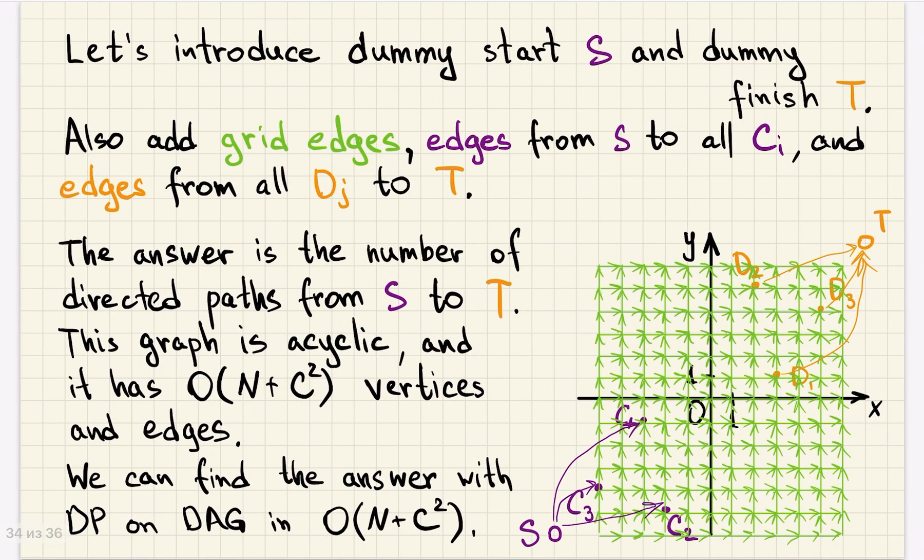Let's introduce dummy start point, dummy finish point, and we will do what we wanted to calculate just formally. From this point we want to go to one of the starts, then we want to move along the grid somehow, end up in one of them, and then move to finish. So if we draw the grid edges up and right everywhere, and edges from start to all of our c_i's, and edges from all of d_j's to finish, then what we want to calculate is the number of directed paths from s to t.